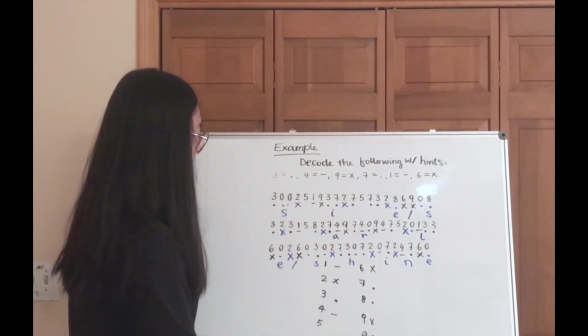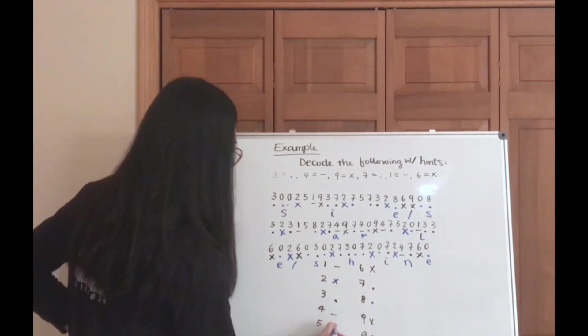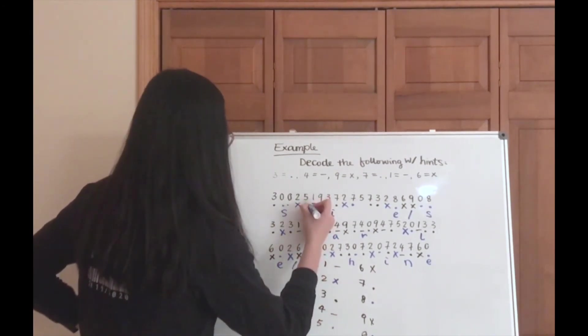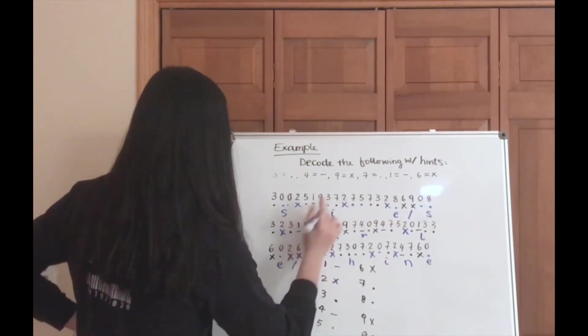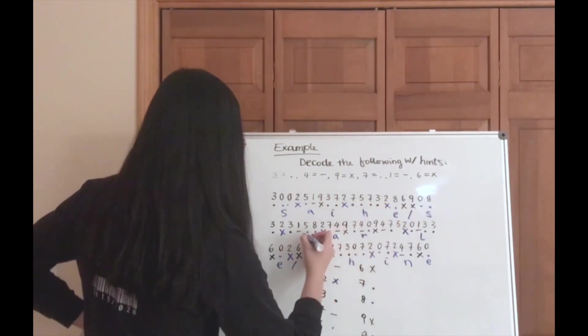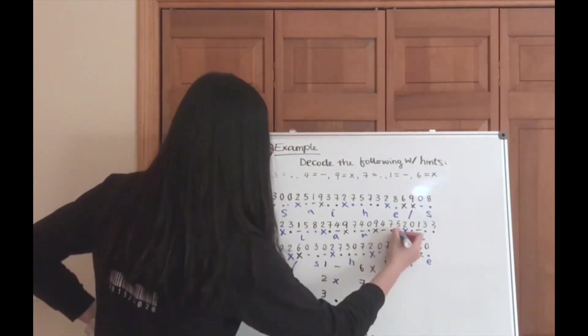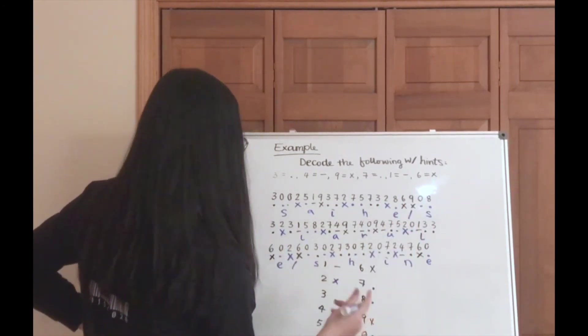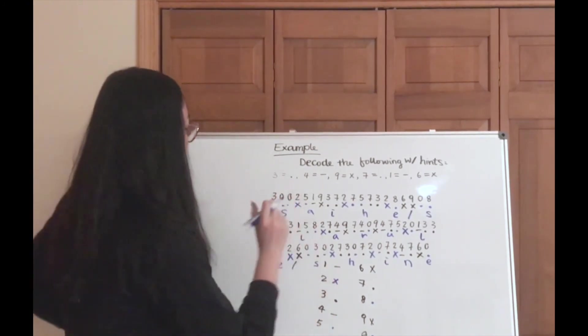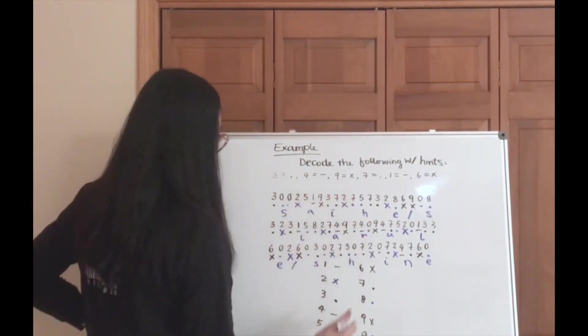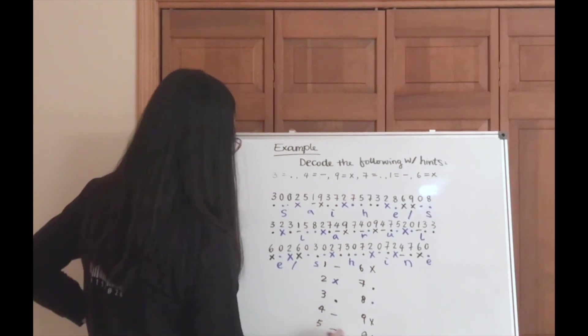And then the last one. So for five, we can also make an assumption that it's a dot. Just say it's a dot and see if it makes sense. So, I'm not seeing too much sense in the sentence, which means that 5 will not be a dot, and we can change that into a dash.